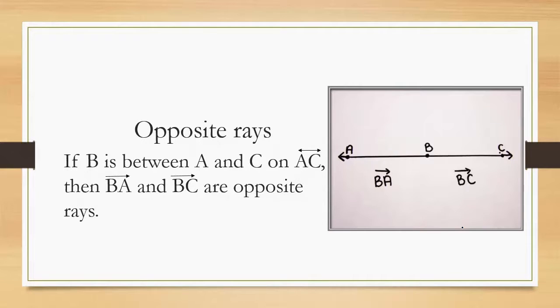Opposite rays. If B is between A and C on line AC, then ray BA and ray BC are opposite rays. So if you can see in this picture, I have B, point B is between A and C on this line AC. And you can see that BA, if I'm starting at B, that's my initial point going towards A, is in the opposite direction of B going towards C.